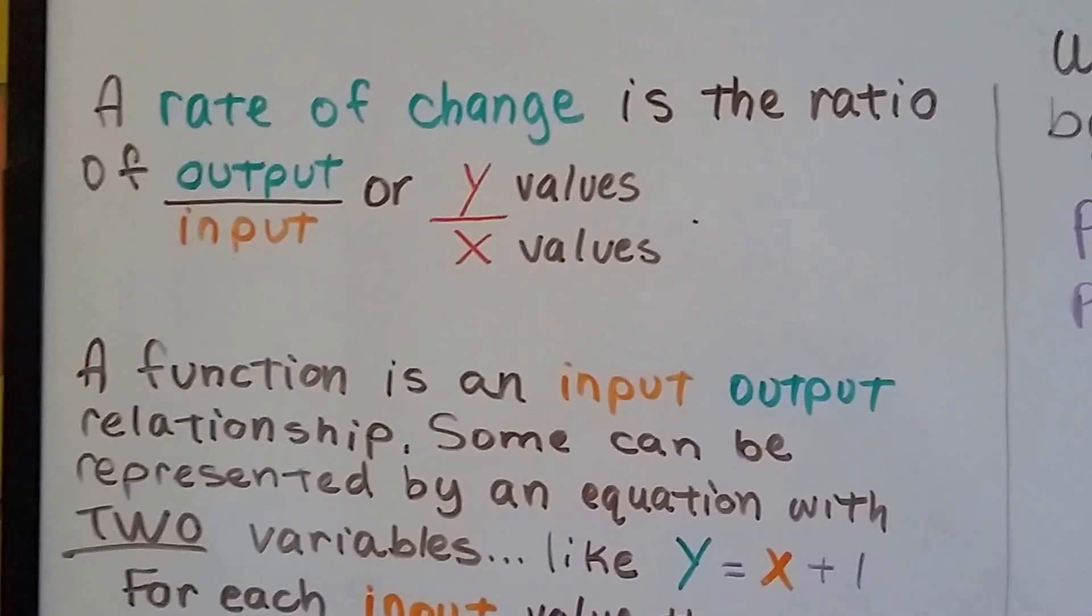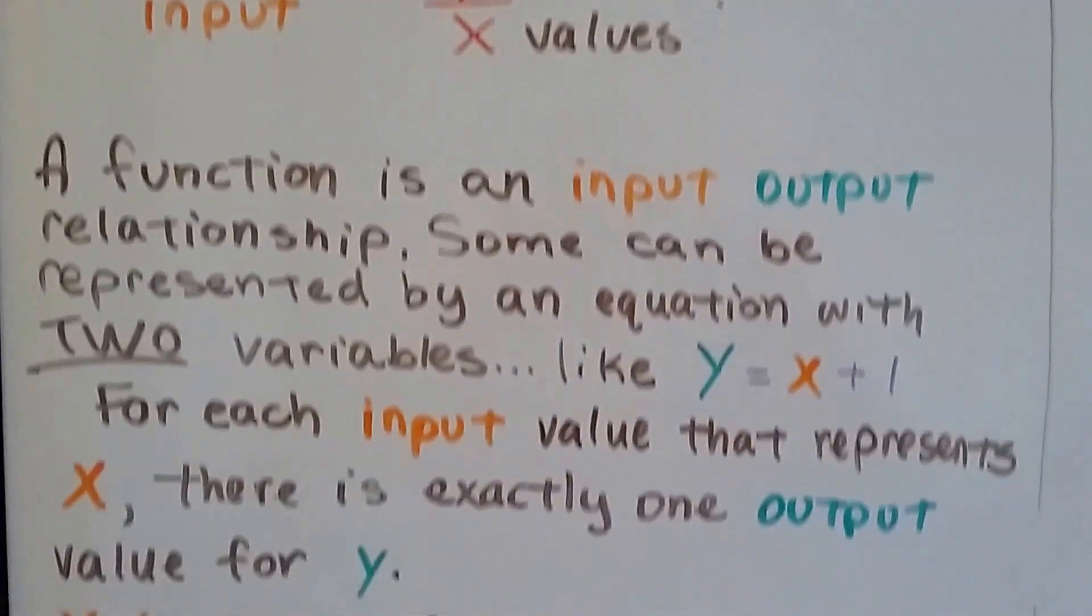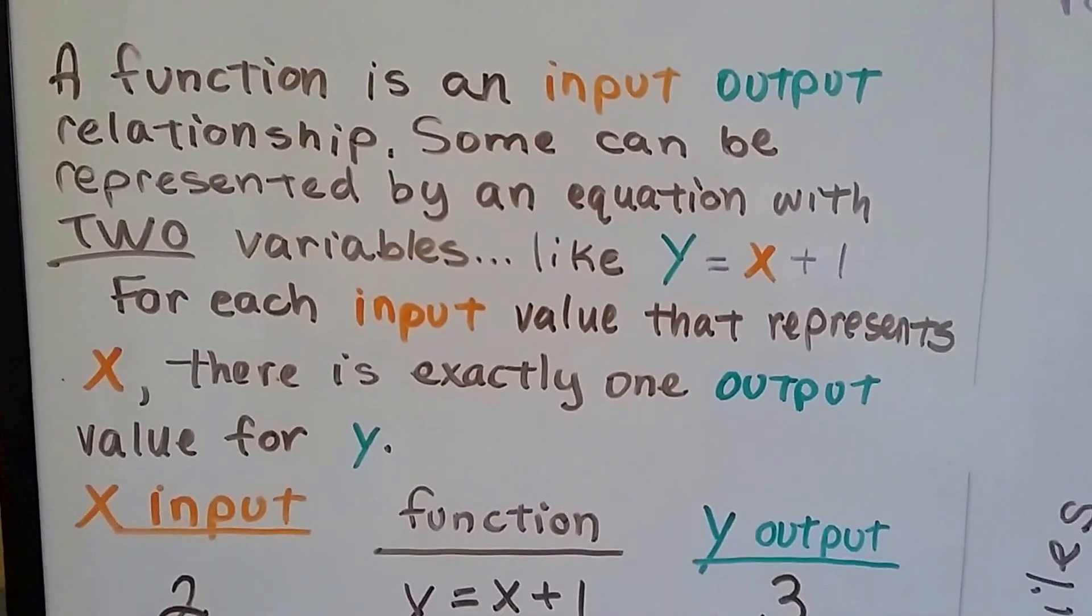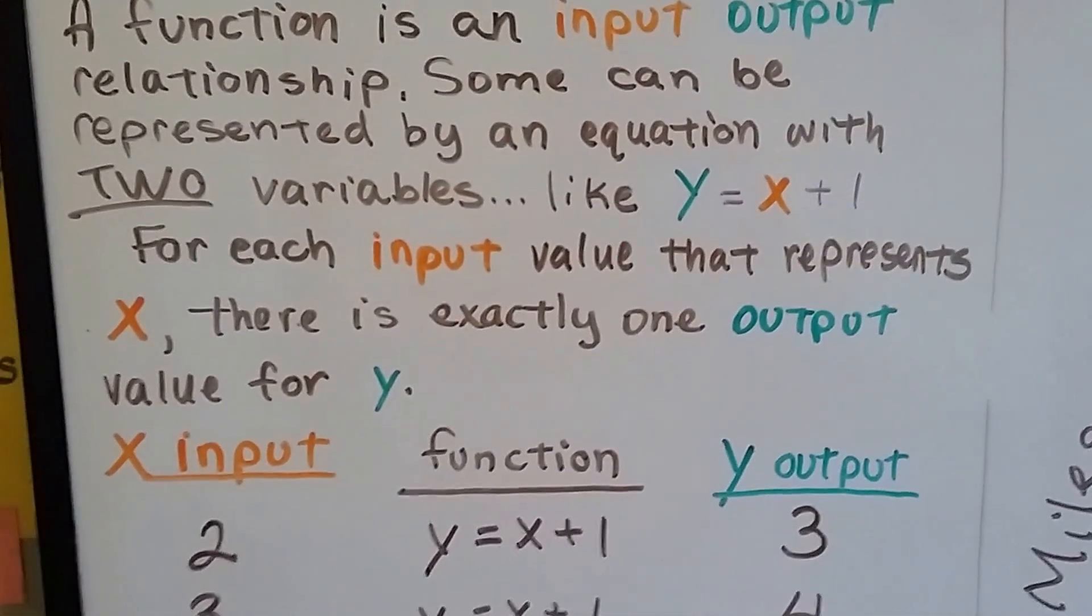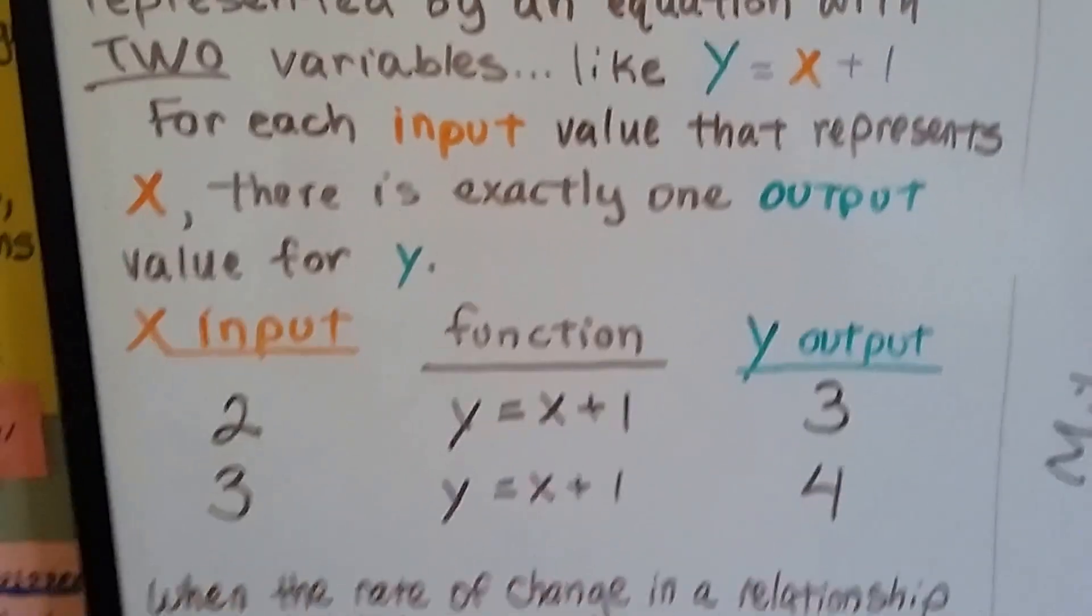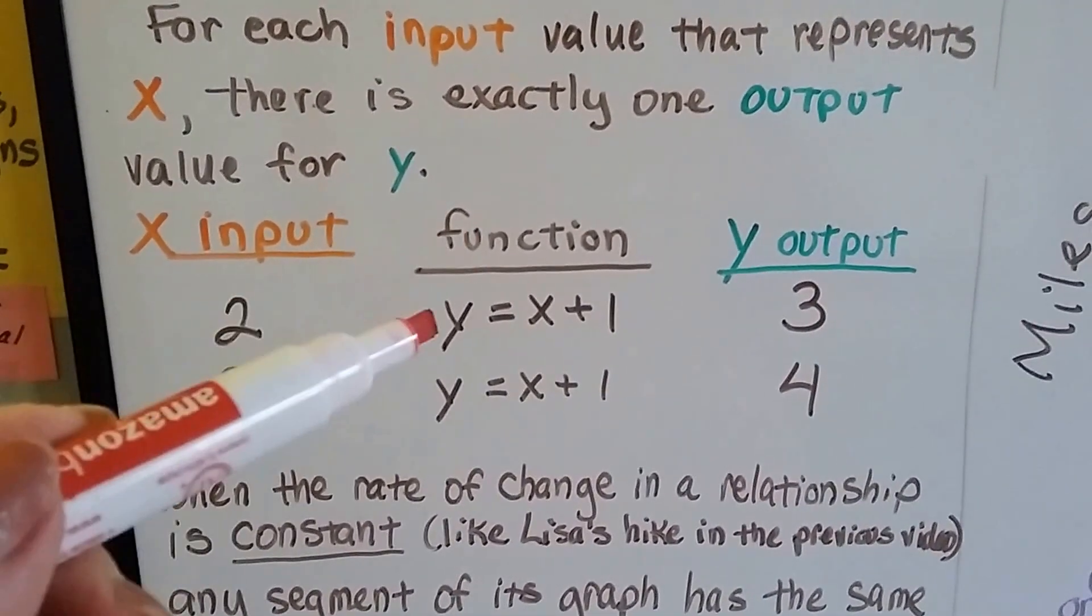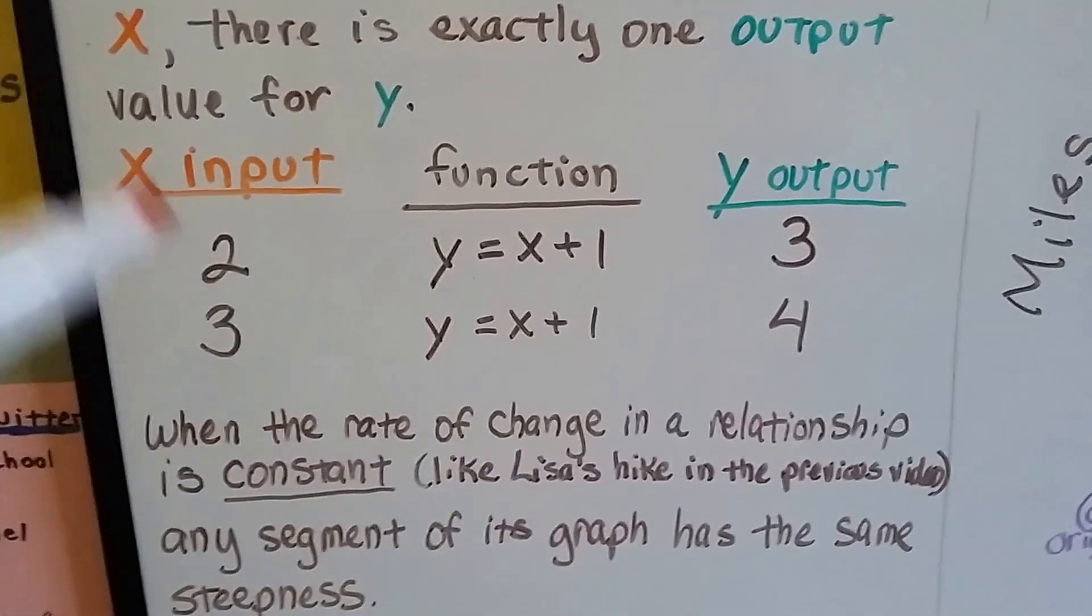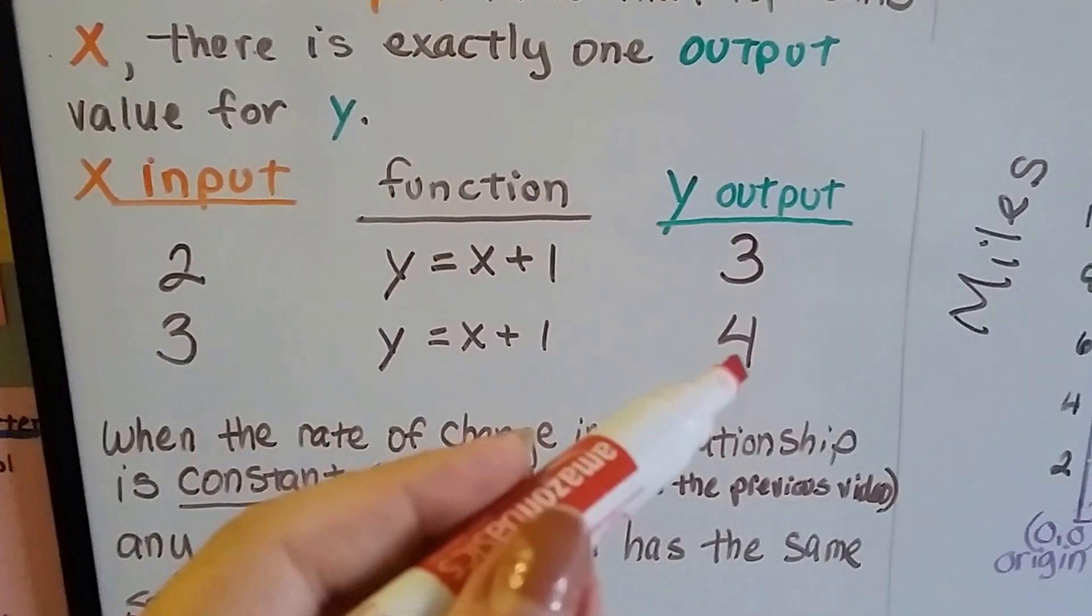As we said in the previous video, a rate of change is the ratio of output over input, or y values over x values. A function is an input-output relationship, and some can be represented by an equation with two variables, like y equals x plus 1. For each input value that represents x, there's exactly one output value for y. If our x value is 2 and our function is y equals x plus 1, our y output is going to be 3. If our x input is 3 and this is the same function, our y output is going to be 4.